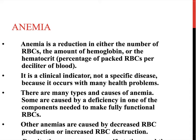Anemia is typically defined as a reduction in the number of red blood cells, the amount of hemoglobin, or hematocrit in the blood. It is a clinical sign, not a specific disease — it is usually the result of another disease. It can typically be caused by increased destruction of red blood cells, decreased production, or blood loss.